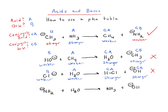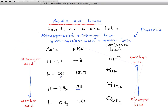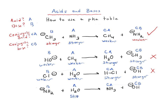Finally: NH2⁻ plus water gives NH3 plus OH⁻. H2O is our acid and NH2⁻ is our base. H2O goes to conjugate base OH⁻, and NH2⁻ goes to conjugate acid NH3. Water is a stronger acid than NH3, and NH2⁻ is a stronger base than OH⁻. So we have stronger acid and stronger base giving weaker acid and weaker base — this reaction is favored.